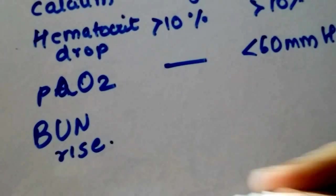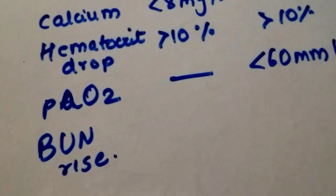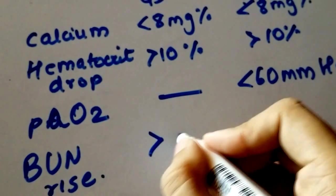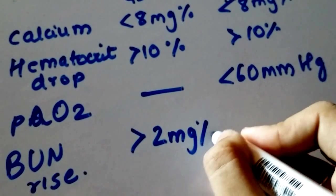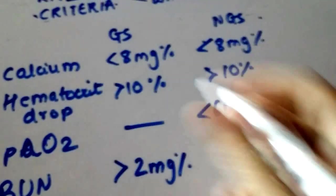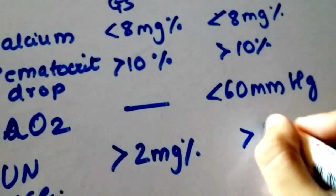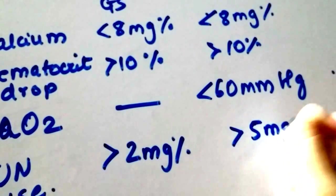And in gallstone pancreatitis, it is greater than 2 milligram percent. And in non-gallstone pancreatitis, it's greater than 5 milligram percent.